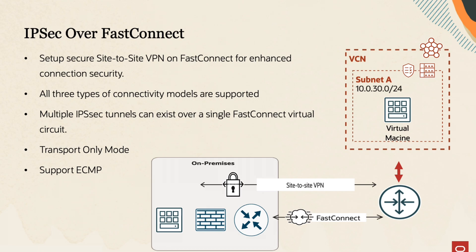Before this feature, if a customer wanted to have security on the FastConnect, they had limited options. They could either enable MACsec, which has its own limitations, or terminate IPsec tunnels on third-party devices such as firewalls in the cloud. This feature eliminates the need for any extra device on OCI. Multiple IPsec tunnels can run on a single FastConnect virtual circuit, supporting mixed encrypted and unencrypted traffic. You also have the option to enforce encrypted traffic only using transport mode.